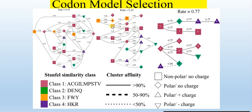Through the color you can easily understand which class each amino acid belongs to. The solid lines show that two amino acids have greater than 90% cluster affinity. Dotted lines indicate 50 to 90% cluster affinity.